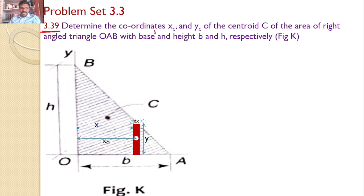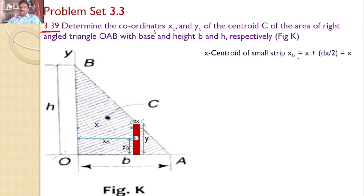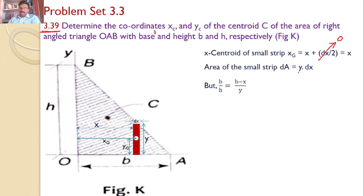Let XG be the centroid X-coordinate for the small rectangular strip and YG be the centroid Y-coordinate for the small rectangular strip. By integrating XG, I can calculate the X-centroid of the triangle. By integrating YG, I can calculate the Y-centroid of the right angle triangle OAB. The X centroid of the small strip is X plus DX by 2, but DX is very small so it can be neglected. Thus XG equals X, and the area of this small strip equals Y into DX. Since Y is not constant, Y is a function of X, and we need to find a relation between X and Y.